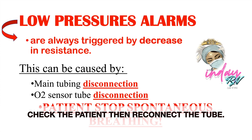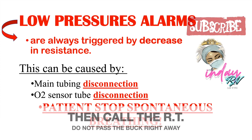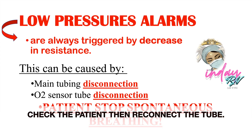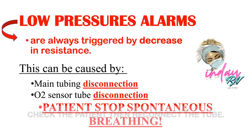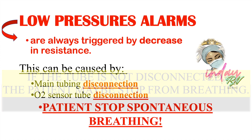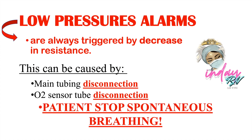In both cases — main tubing disconnection and auto-sensor tube disconnection — first check the patient, then reconnect the tubings, and call for the respiratory therapist to fix the issue. If there is a low pressure alarm, check the patient first to determine if it is truly disconnected or if the patient has stopped breathing. If it is disconnected, reconnect it and call the RT.